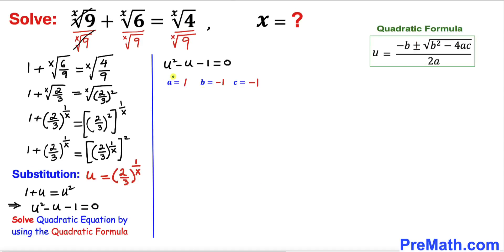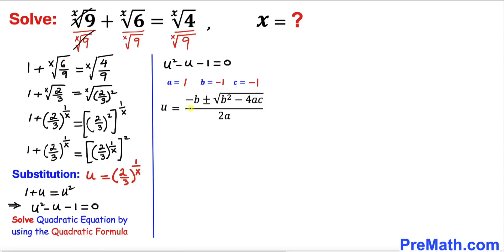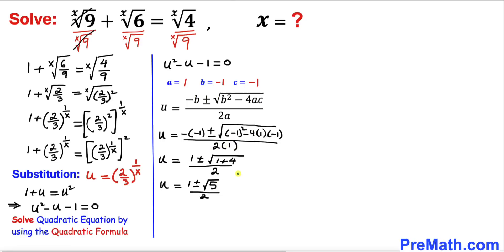This is a quadratic equation and we'll solve it using the quadratic formula. Here a equals 1, b equals negative 1, and c equals negative 1. Substituting: u equals negative (−1) plus or minus square root of (−1)² minus 4(1)(−1), all divided by 2(1). This simplifies to u equals (1 plus or minus square root of 5) divided by 2.